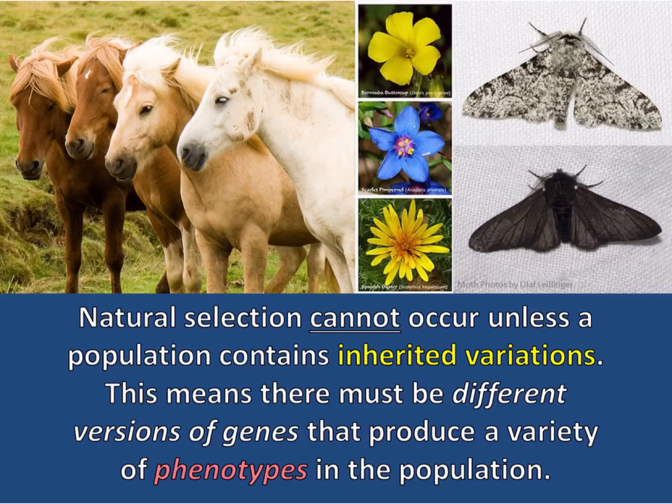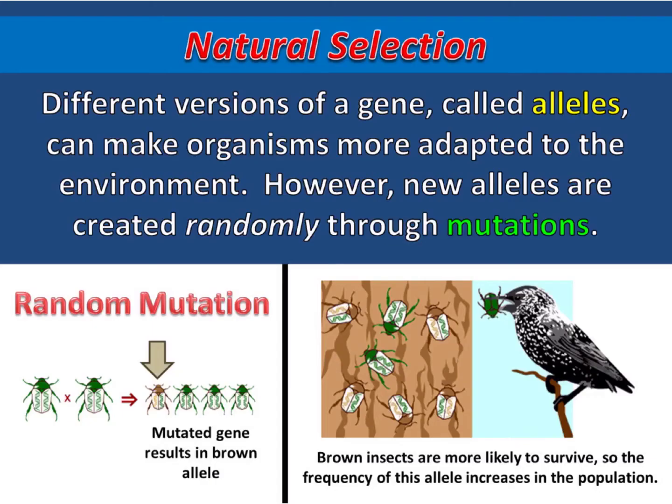This means there must be different versions of genes that produce a variety of phenotypes in the population. In order for one adaptation to be better than another, the adaptations must first be different. Different versions of a gene, called alleles, can make organisms more adapted to the environment.